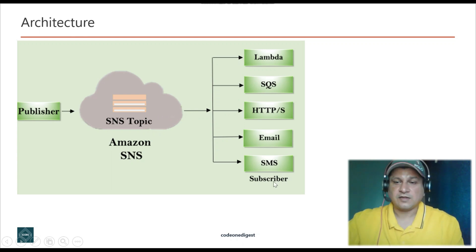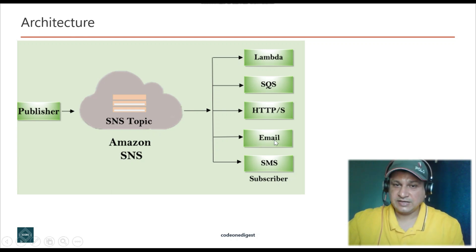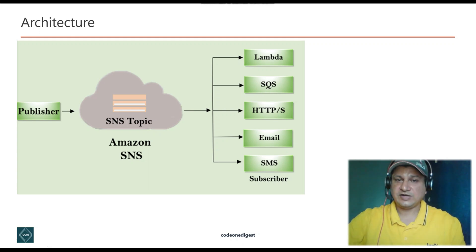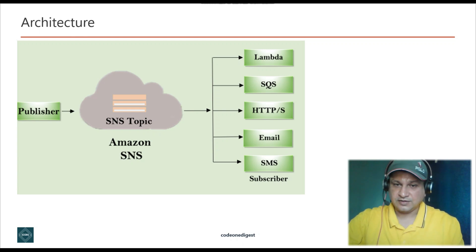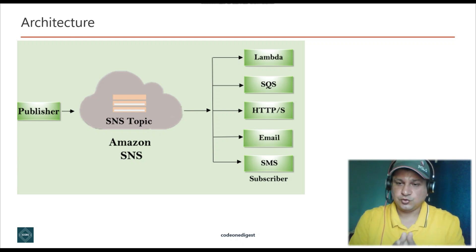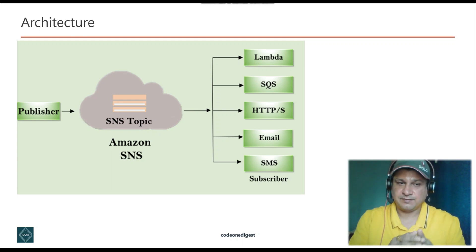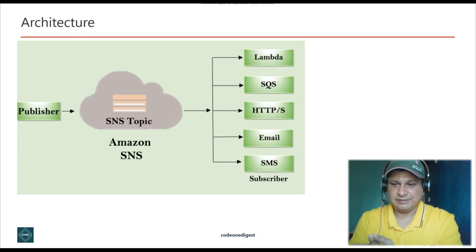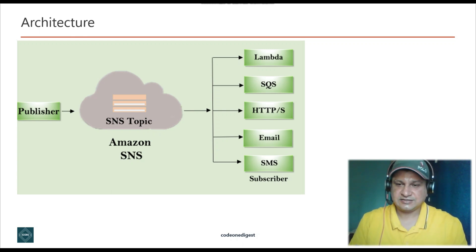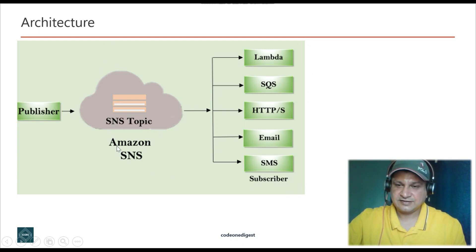Subscribers can receive this notification via various channels: via text SMS, via email, you can push those messages to SQS, or you can send the message to Lambda for further processing. There are multiple subscriber channels possible. In this tutorial I'll demonstrate with simple email communication, where a user subscribes to the topic via email so that any message coming on this topic will be delivered to that email address.